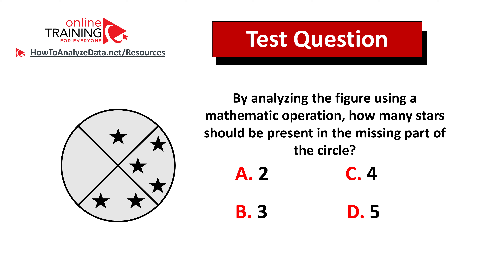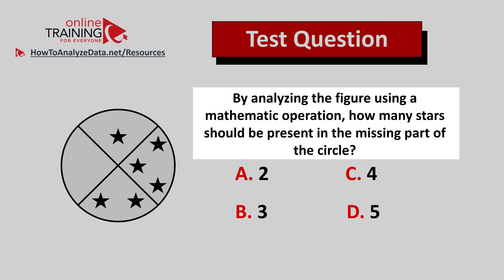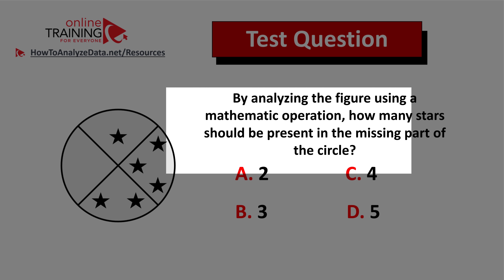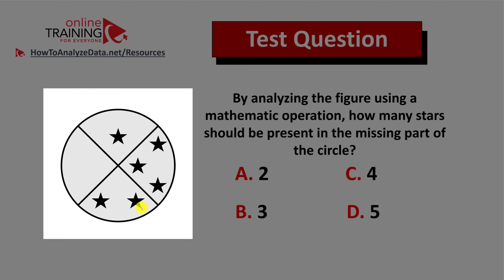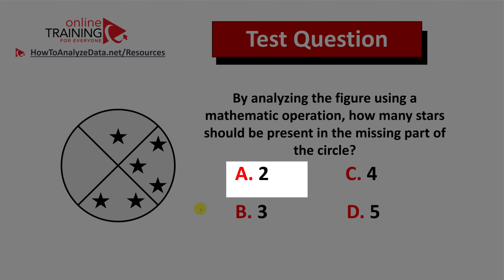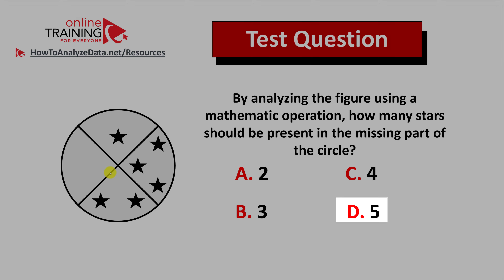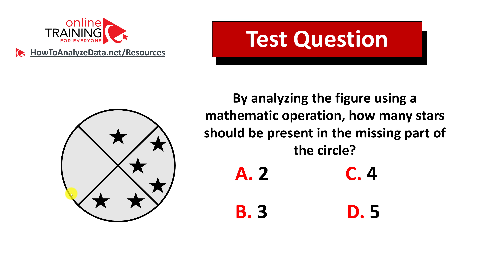Let's look at the tricky question which tests your knowledge of reasoning as well as math skills. Here's the question: by analyzing the figure using a mathematical operation, how many stars should be present in the missing part of the circle? You have a circle broken down into four equal parts, three of which already have stars — one, two, and three stars respectively. You have four different choices: choice A is two, choice B is three, choice C is four, and choice D is five. Can you determine how many stars the blank part of the circle should have? Give yourself 10 to 20 seconds.